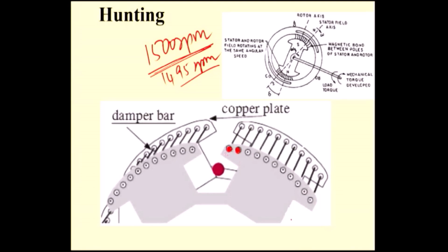Normally, the damper winding is placed in the pole face of the rotor. In the damper winding, EMF will be induced, which produces current. Since the damper winding is short-circuited — a closed path — current will flow. Because of the 5 RPM speed difference between 1500 and 1495 RPM, EMF is induced in the damper winding, which drives the current. Any current-carrying conductor produces its own flux, so the rotor flux increases because of this.